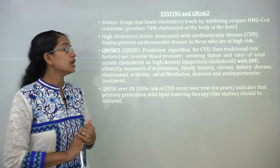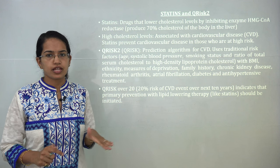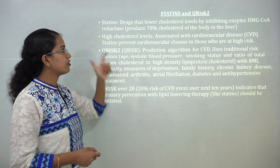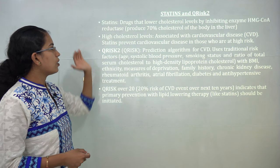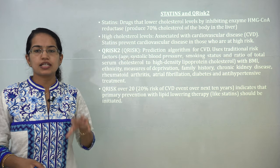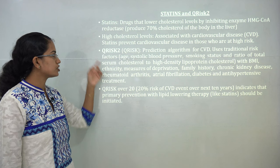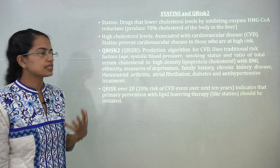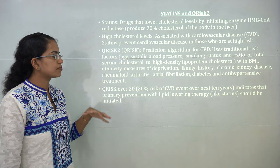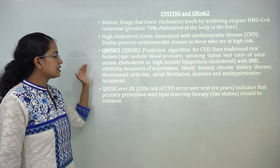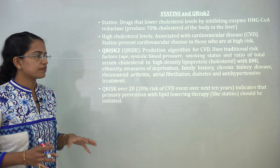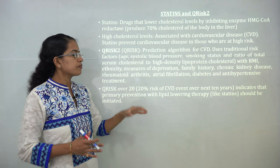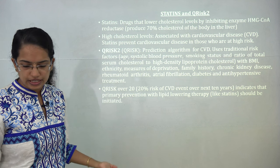Statins are drugs which lower cholesterol levels in the body — given to persons with high LDL and triglyceride levels — and can reduce cholesterol by up to 70%. A prediction algorithm for cardiovascular diseases was developed, known as Q-Risk 2; the newer second-generation version is Q-Risk 3. It uses traditional parameters like body mass index, high-density lipoprotein cholesterol, blood pressure, family history, and kidney diseases. A Q-Risk score over 20 indicates a 20% risk of cardiovascular disease in the next 10 years, at which point primary prevention with lipid-lowering therapy such as statins can be initiated.